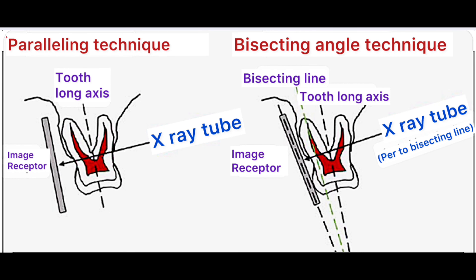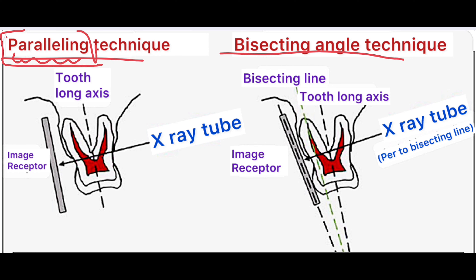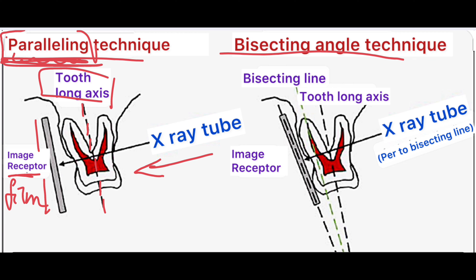Now let us see the parallel angle technique and bisecting angle technique in detail. In the parallel angle technique, the film placement is parallel to the tooth surface. As you can see, this image receptor or film is placed parallel to the long axis of the tooth. This is the direction of the x-ray tube. In parallel angle technique, the x-rays should be parallel to the image receptor or the film.